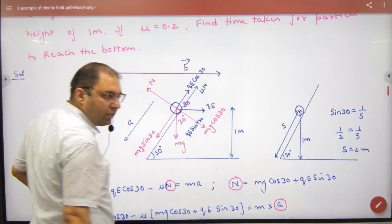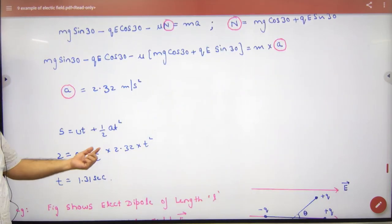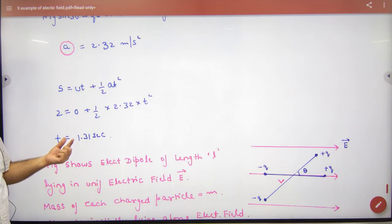So s's value, what will come? 2, which we had already calculated from here. This is 2 meters from here. So s is equal to 0 plus half at squared. Acceleration we have already calculated. From here time can be calculated.